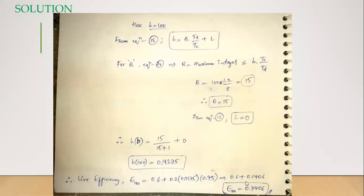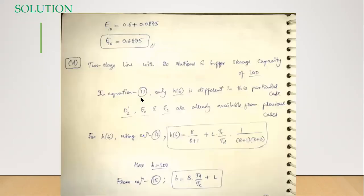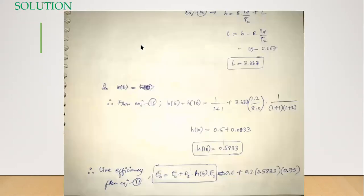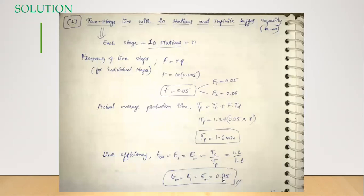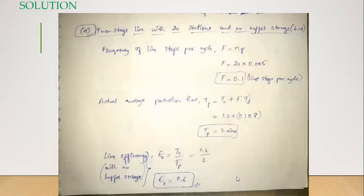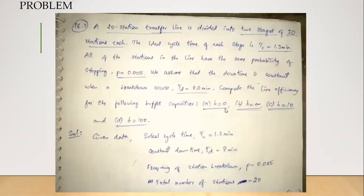Substituting all terms, we get the line efficiency for a storage capacity of 100 as 0.7406 — very close to the infinite case of 0.75, which is not practical. So summarizing all four cases: for B=0 we got 0.6, for B=10 we got 0.6875, for B=100 we got 0.7406, and for B=∞ we got 0.75. The line efficiencies for all four cases have been calculated.